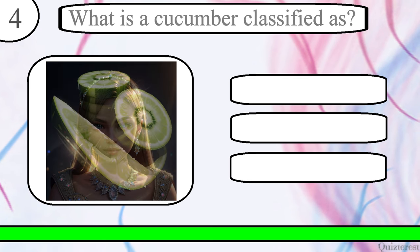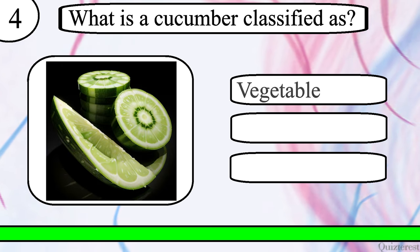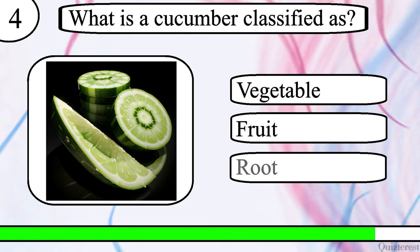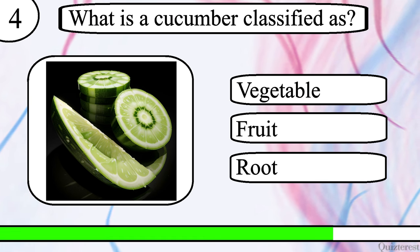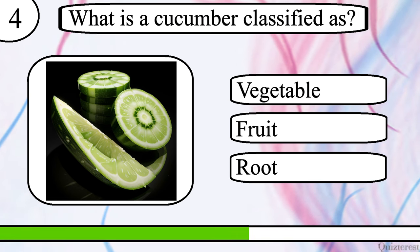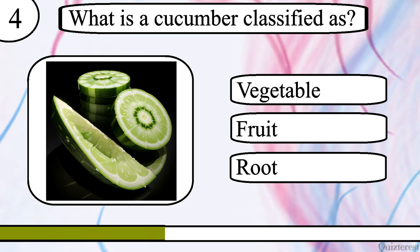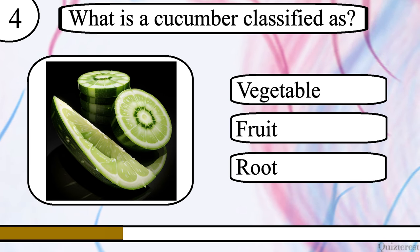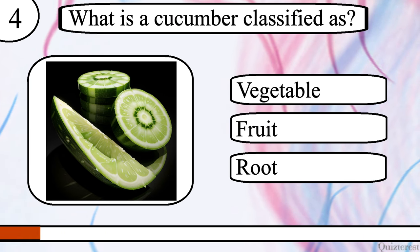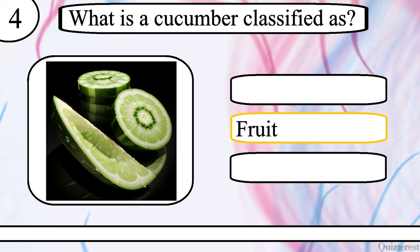Question 4. What is a cucumber classified as — vegetable, fruit or root? The correct answer is fruit.